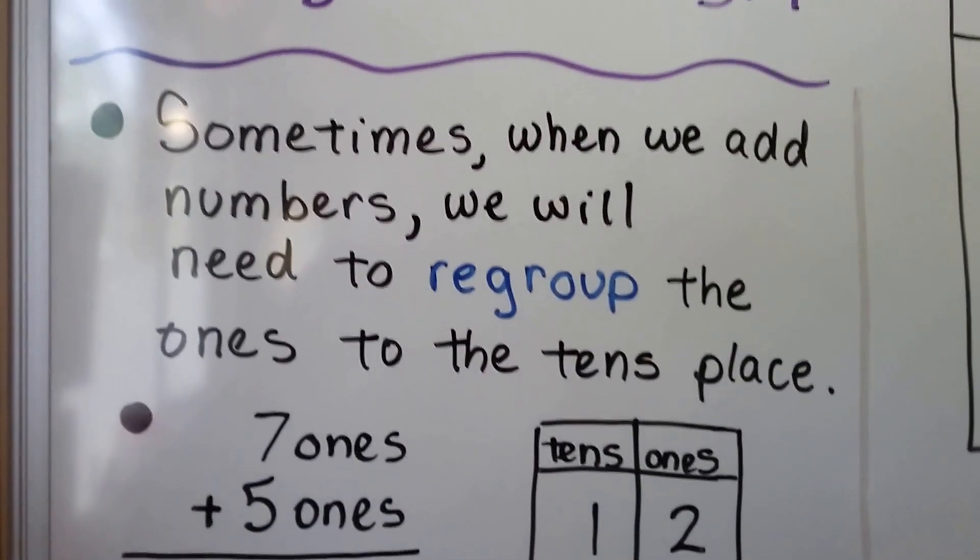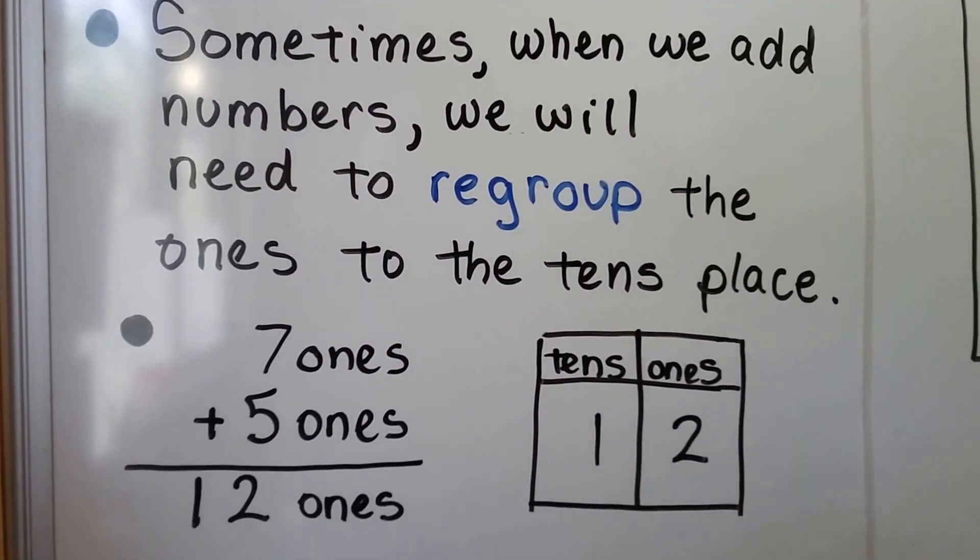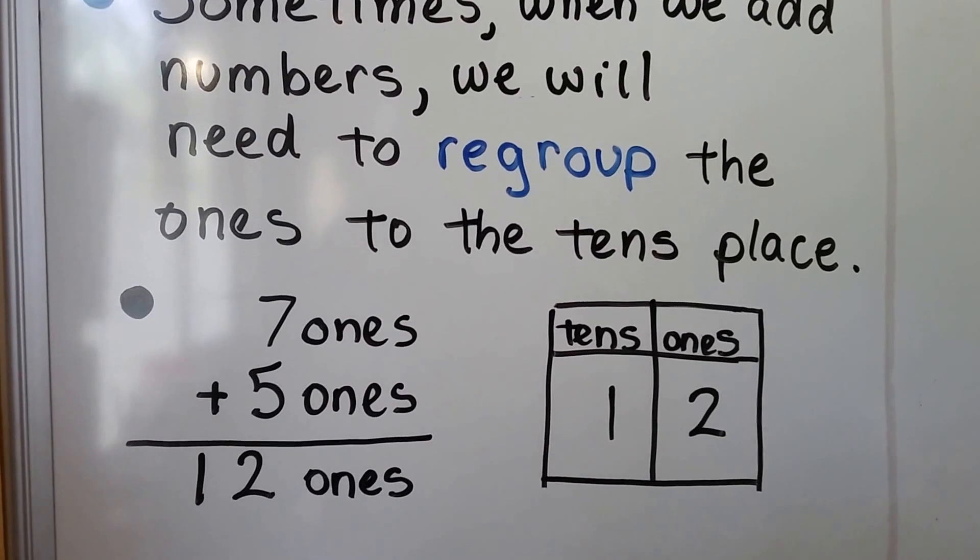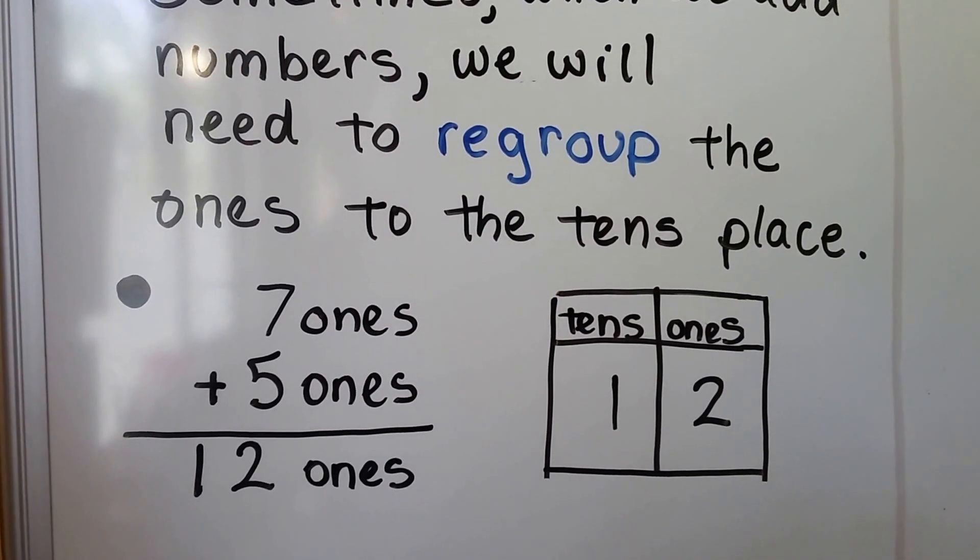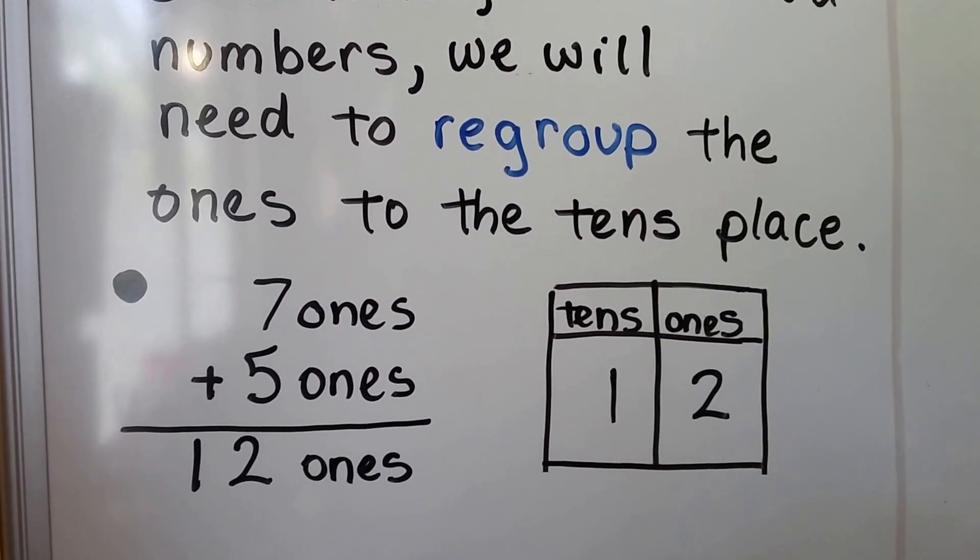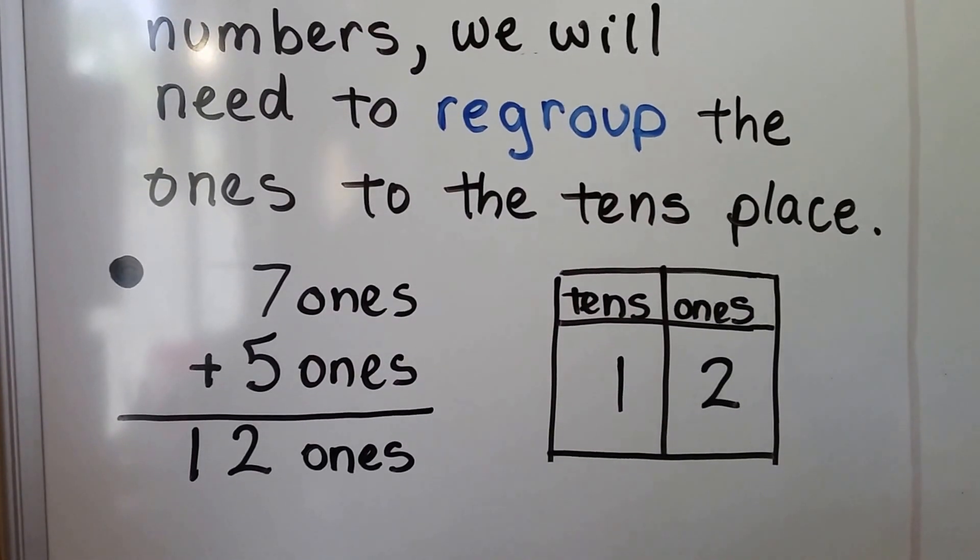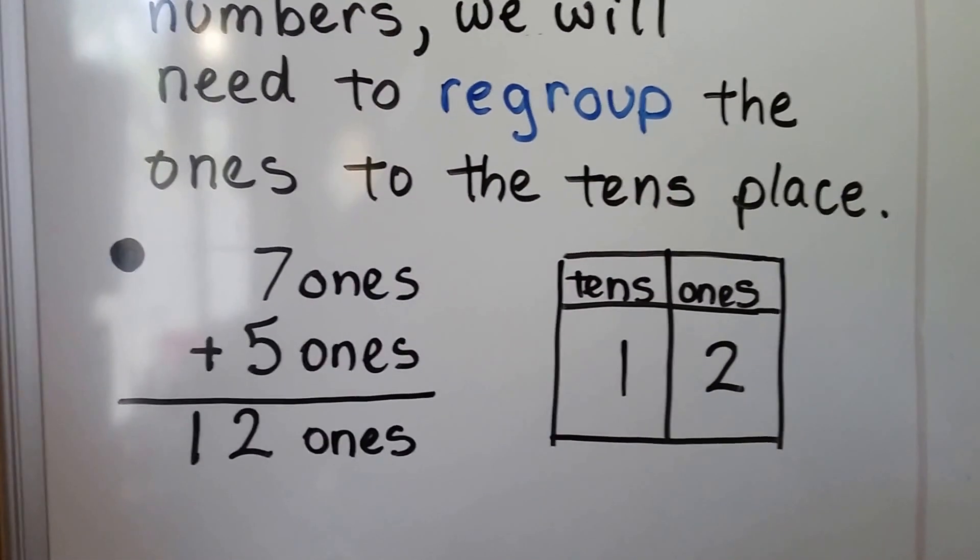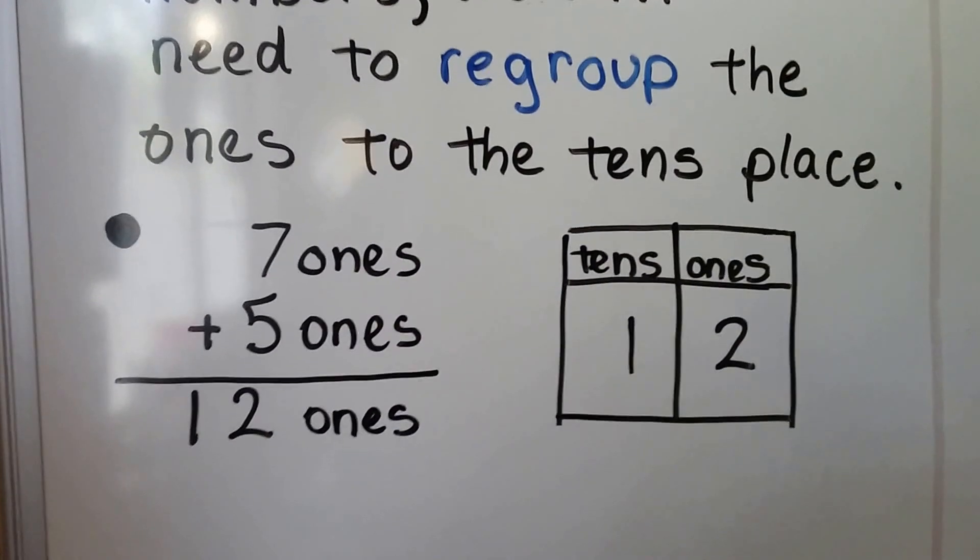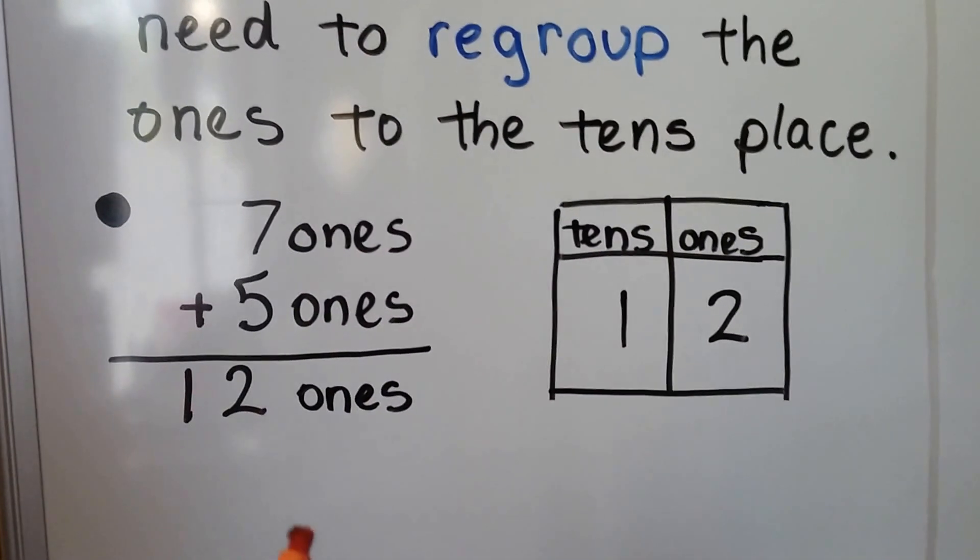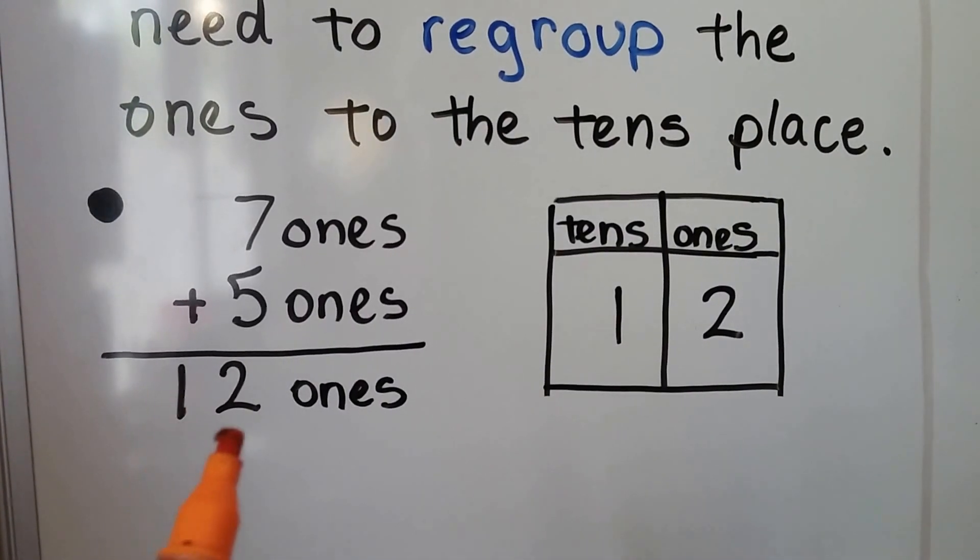Sometimes when we add numbers, we'll need to regroup the ones to the tens place. If we add 7 ones and 5 ones, we'll get 12 ones. But we can see there's a 2 in the ones place and a 1 in the tens place. See that? So it changed, really, into a 10 and 2 ones.